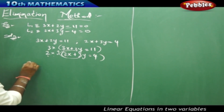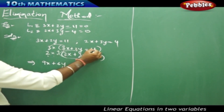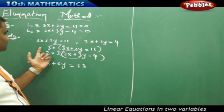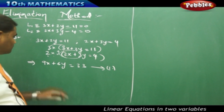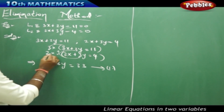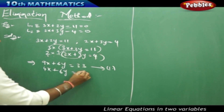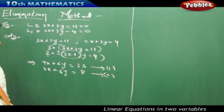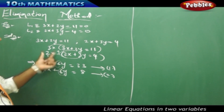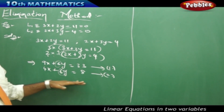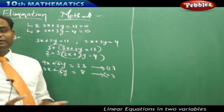When multiplied, equation 1 gives 9x plus 6y equals 33, and equation 2 gives 4x plus 6y equals 8. As you can see, the coefficients of y are now both 6 — this is the key step. Making one set of coefficients equal is essential for elimination. I have multiplied simultaneously, and this is the most important step in the elimination method.